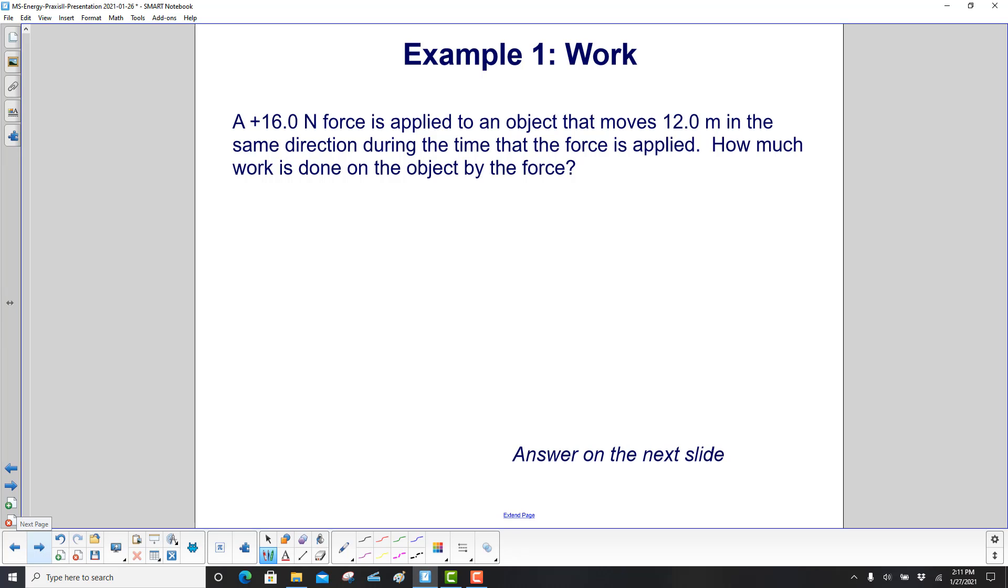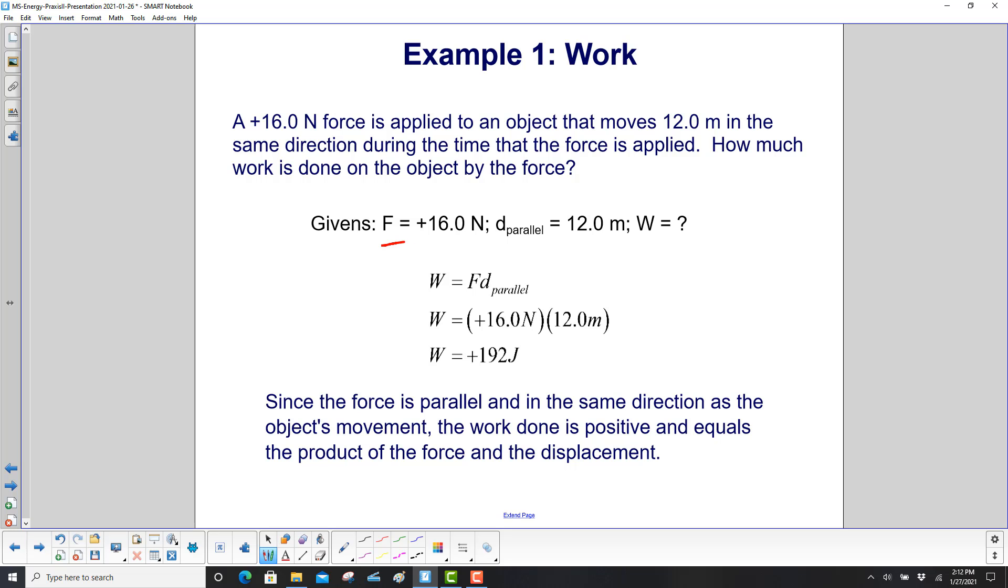Example time. A 16 newton force is applied to an object that moves 12 meters in the same direction during the time that the force is applied. How much work is done on the object by the force? Let's start by writing down our givens, and we have d parallel here, because it's in the same direction we want to find work. So our equation is work equals Fd parallel, substitute in our variables, and we get a positive 192 joules work. Since the force is parallel and in the same direction as the object's movement, the work done is positive and equals the product of the force and the displacement.